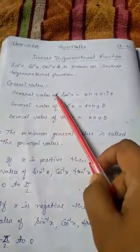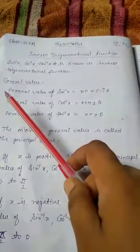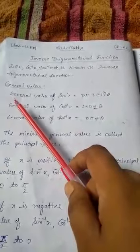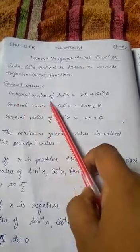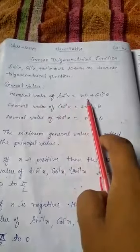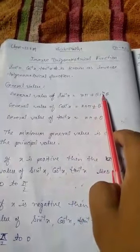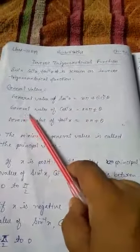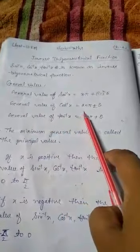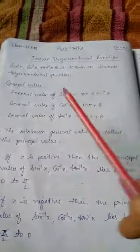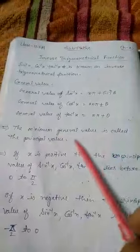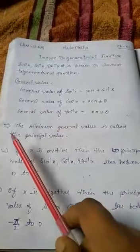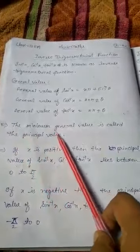General value: In previous class you have studied general values. Similarly, general value of sine inverse x is equal to nπ plus minus (-1)^n into θ. General value of cos inverse x is equal to nπ plus minus θ. General value of tan inverse x is equal to nπ plus θ.